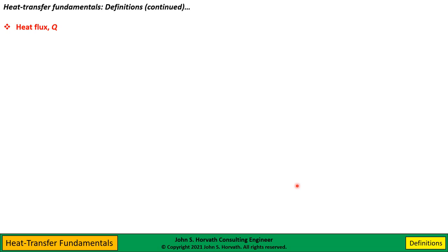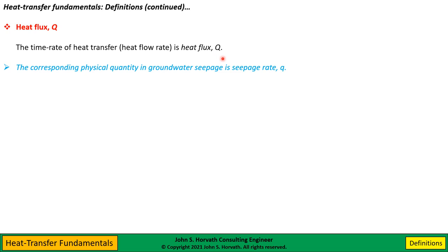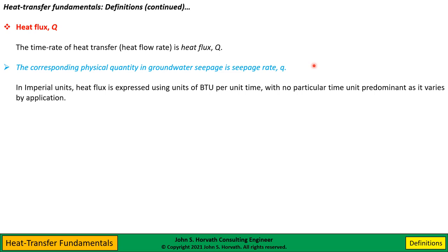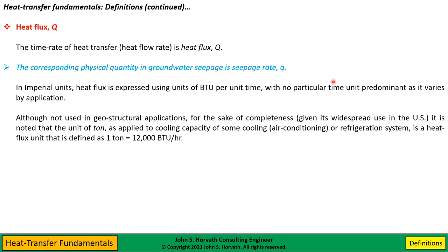The next parameter is heat flux, capital Q. Heat flux is the time rate of heat transfer — the heat flow rate. The corresponding physical quantity in groundwater seepage is the seepage rate, generally lowercase q. In imperial units, heat flux is expressed in BTUs per unit time, and there is no particular time unit that predominates — it varies by application, so it could be seconds, minutes, hours, days, weeks, or years. Note as an aside that when you hear people talk about air conditioning or refrigeration systems, units are often sized in tons; in a heat flux context, one ton equals 12,000 BTUs per hour.